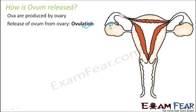The graafian follicle will rupture and the egg will get released. The egg will be received by finger-like projections called fimbriae, which will push the egg towards the fallopian tube. That is how the egg gets released from the ovary into the fallopian tube — this process is known as ovulation.